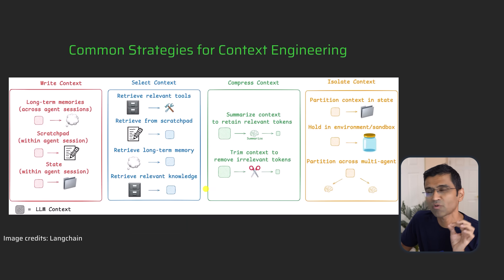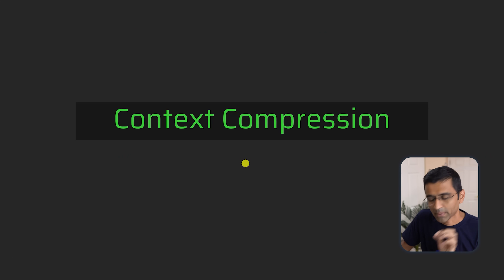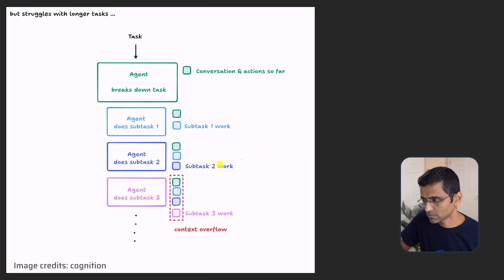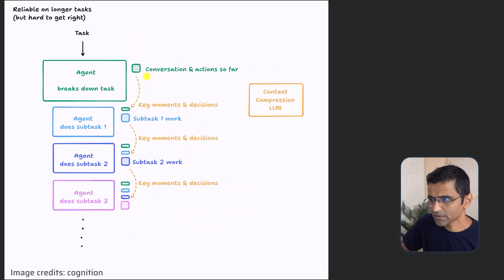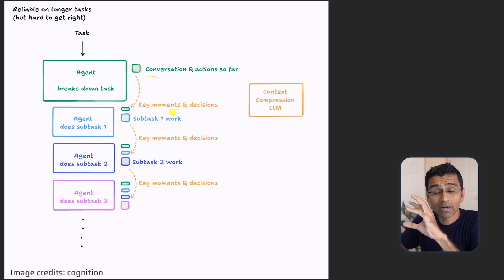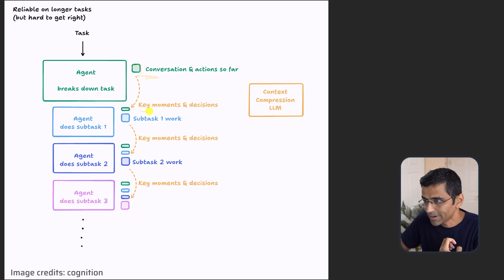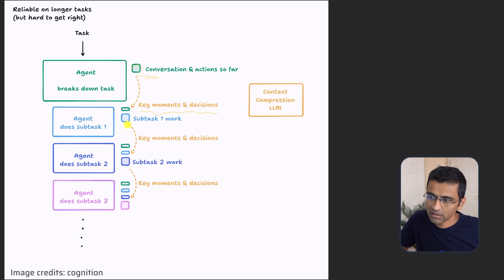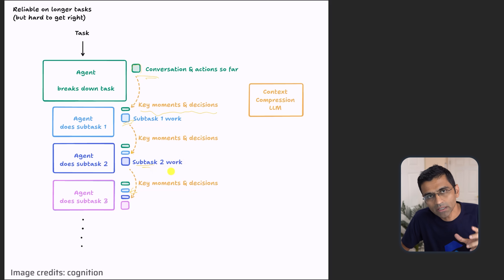There are four common strategies for context engineering as per Langchain. The first one is context compression. When you run into a context overflow situation where your context is very large, you can compress the context — removing unnecessary information or extracting only useful information, such as key moments and decisions, to make that context smaller. Each turn, you compress the previous context so it stays good quality while respecting the context window token limit.